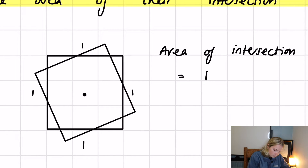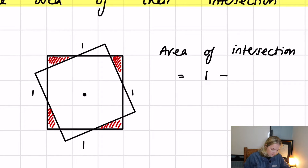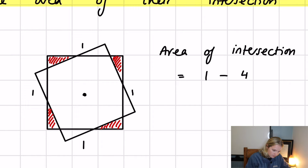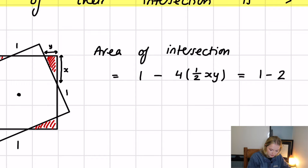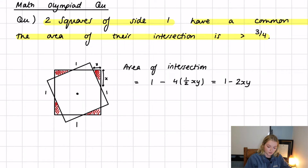What we're going to do is take each of these corner triangles — they're all equal by rotational symmetry. For simplicity, call the legs of each triangle x and y. The area of each right triangle is one-half xy, and there are four of them, so the area of intersection equals one minus four times one-half xy, which gives us one minus 2xy.